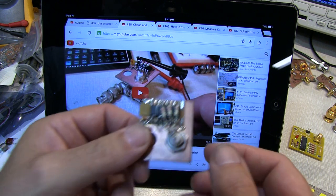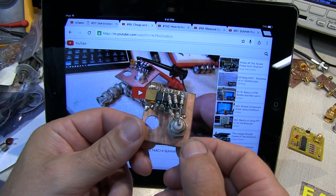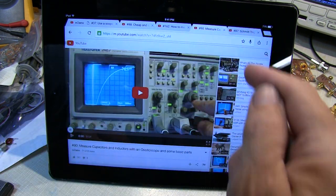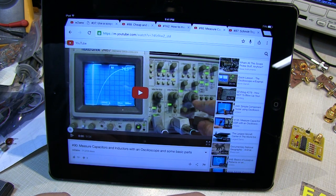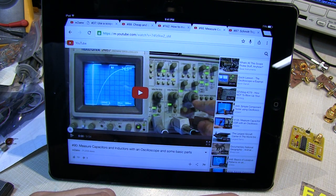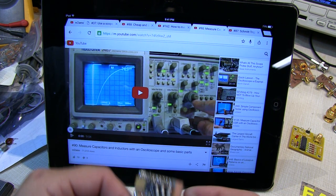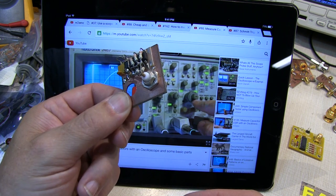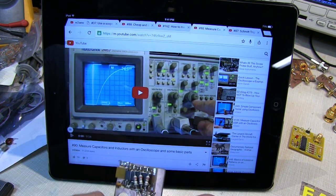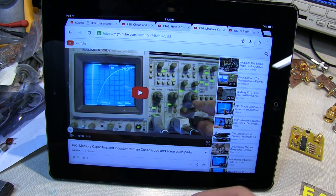This oscillator was also used in video 90, which shows how to measure capacitors and inductors with some basic parts. It essentially used this oscillator as a source to measure capacitors and inductors.